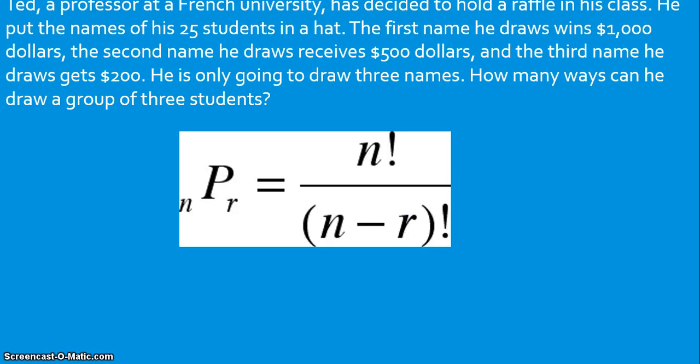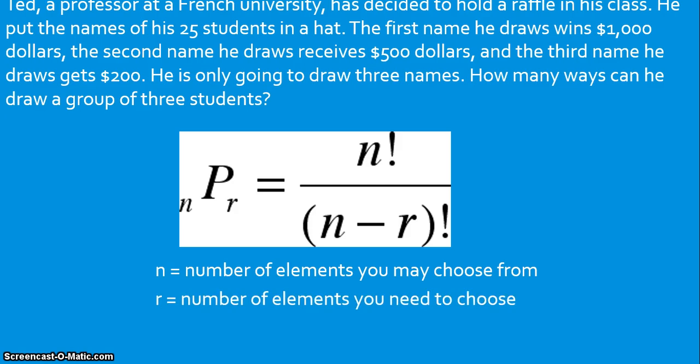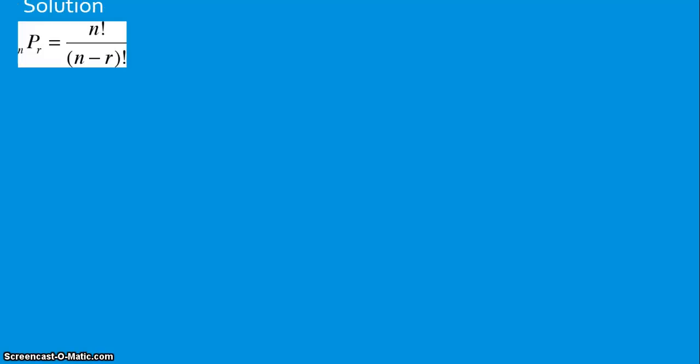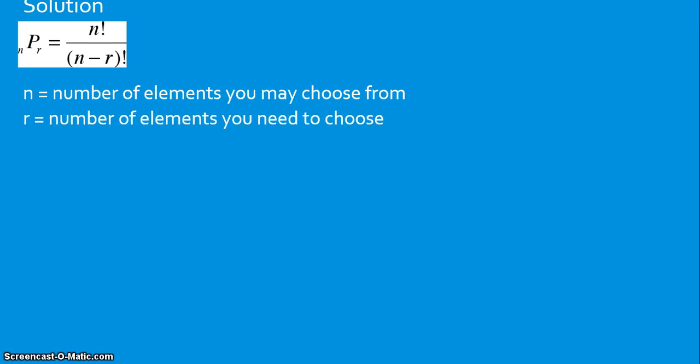And that formula is this. And basically, this is saying n factorial, which is the number of elements you may choose from. So in this case, 25. And r, the number of elements you need to choose. You need to choose 3, right? So let's plug in the formula. I think it'll make a whole lot more sense. So it's n factorial divided by n minus r factorial.